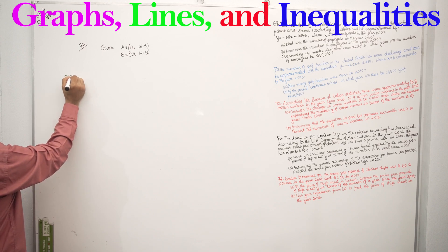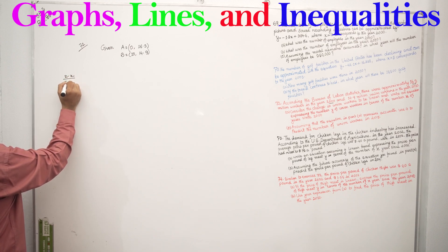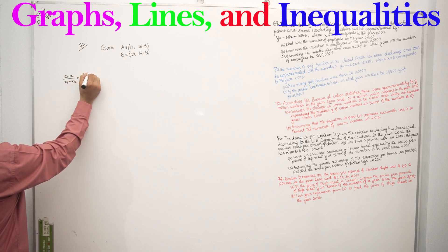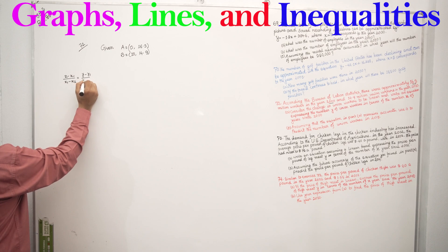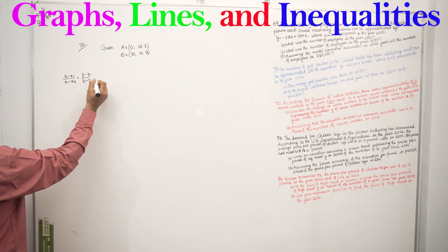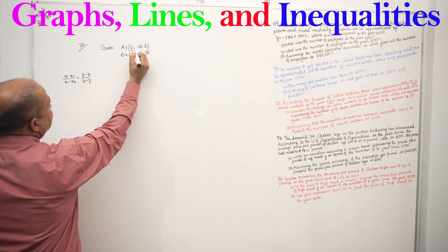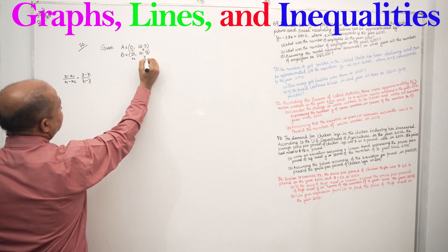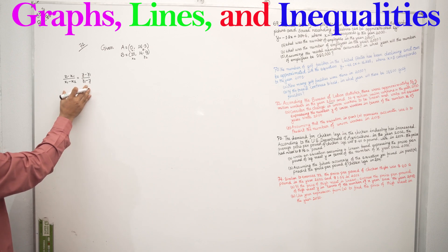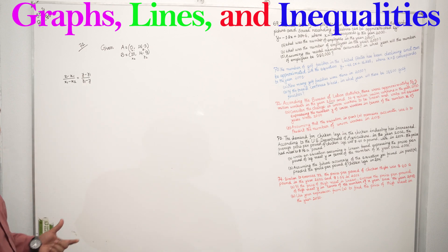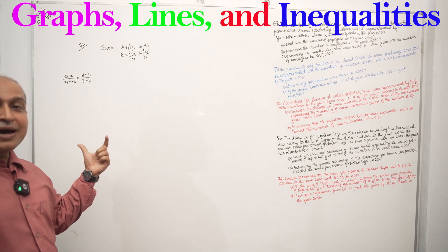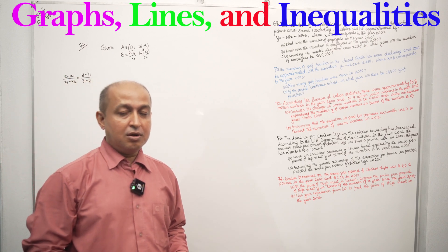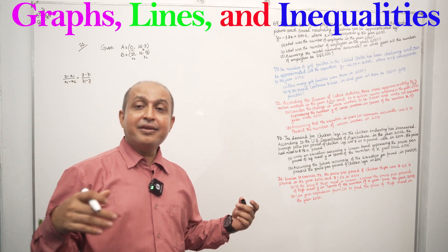Using the two-point formula: x minus x1 divided by x1 minus x2 equals y minus y1 divided by y1 minus y2. We need to find the linear equation of the form Y equals something.